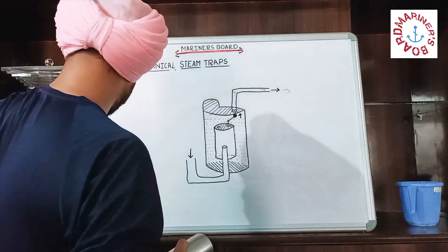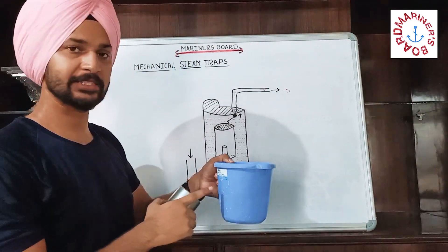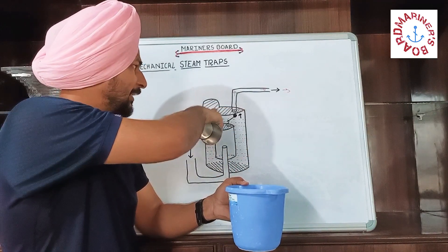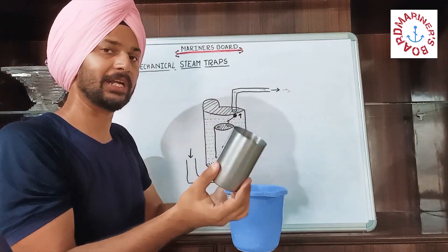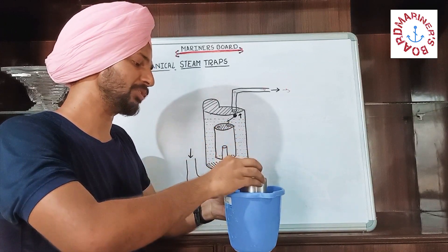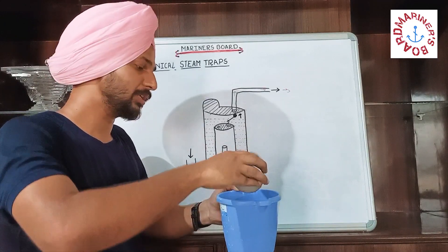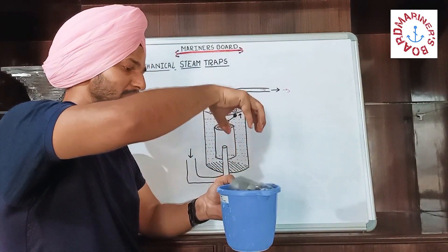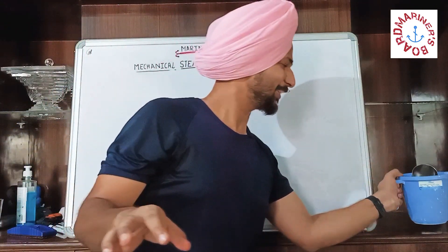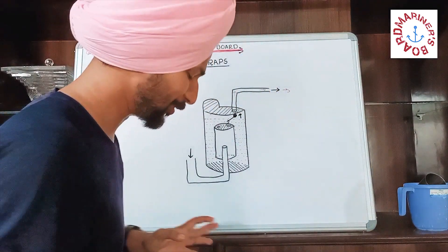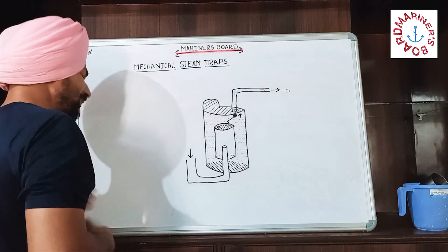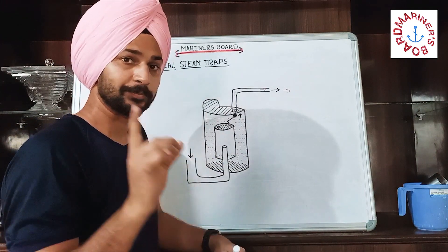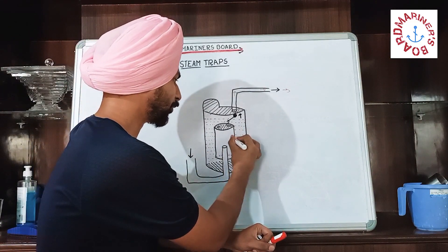To give a demonstration: if this inverted bucket is placed in water and it is empty inside, it gives greater buoyancy. But if a little amount of water is added inside it, the buoyancy is reduced and it sinks. Initially, when there is no water inside the inverted bucket, it moves upward and this valve is closed.